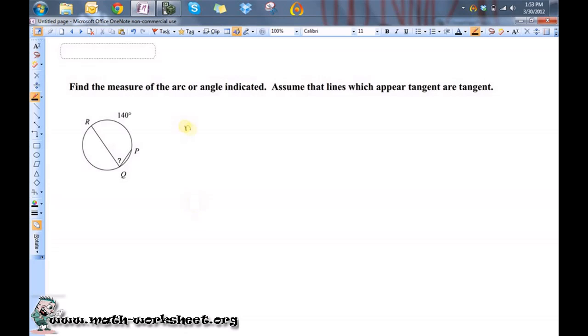The measure of angle RQP is going to be equal to one-half the arc, the measure of the arc that is created by that angle. So it's one-half the measure of arc RP.